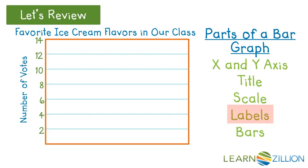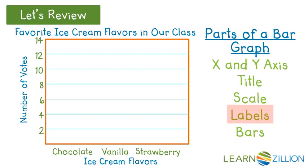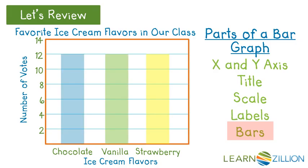We always need to label our x and y axis so everybody knows what the values are. The y axis is labeled 'Number of Votes' and the x axis is labeled 'Ice Cream Flavors.' We also need to know what the ice cream flavors are: chocolate, vanilla, and strawberry. And of course we have the bars — that's why they are called bar graphs.